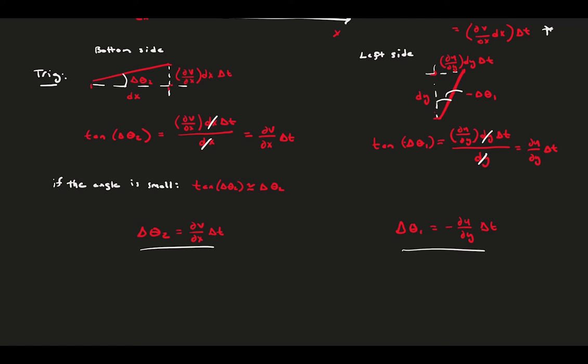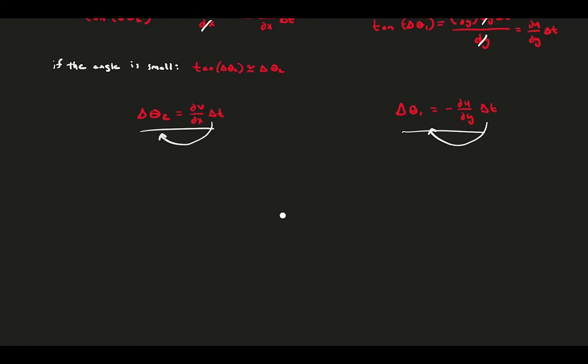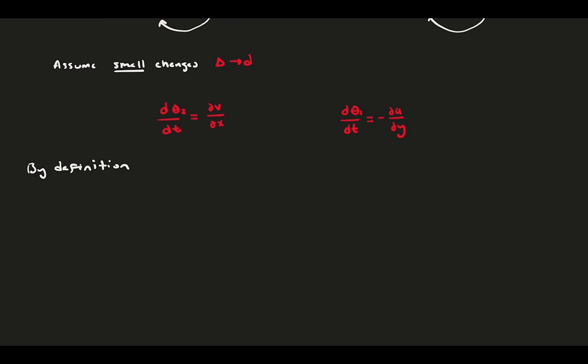And now, we have relations for both angles. But, we're eventually looking for the rate of deformation, not just the angle, so we'll want to move our delta t's over to the left side. Assuming changes are small, we can turn our deltas into differentials and we have the time derivative of the angles. By definition, this is the angular velocity of our fluid element, and it is the average of angular velocities of our two sides.